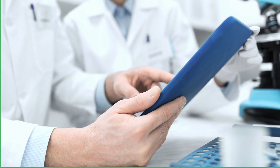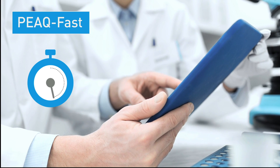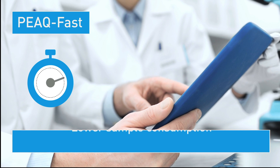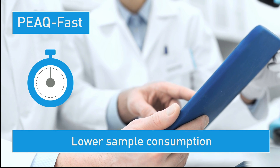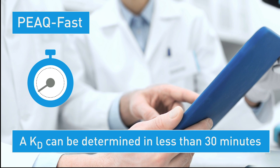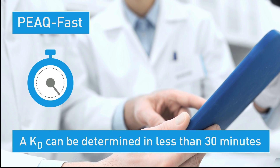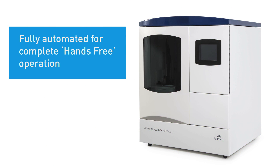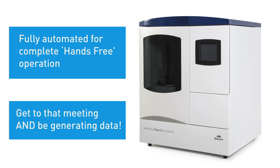The third aspect of this system is peak fast. The fast response time of the instrument has a significant effect on sensitivity, allowing for lower sample consumption and reducing the experimental time. A KD can be determined in less than 30 minutes, including all the analysis. The instrument can also be fully automated for complete hands-free operation — you can get to that meeting and still be generating data.